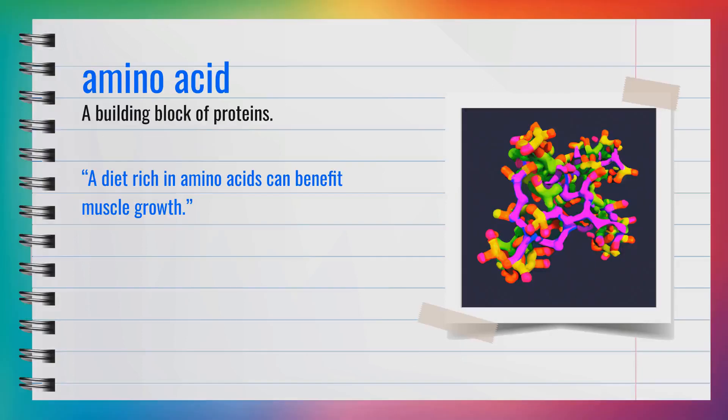The word amino acid is a noun. Synonyms include protein building block. For example, a diet rich in amino acids can benefit muscle growth. In summary, an amino acid is a building block of proteins.